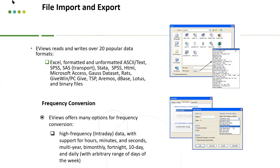The next part is the import and export function. eViews can read over 20 popular data formats, for example Excel, SAS, SPSS, or even text files. A good feature is frequency conversion — since eViews works with time series data, you can sort your data from increasing to decreasing, select specific samples, and change the dataset from monthly to yearly to daily.